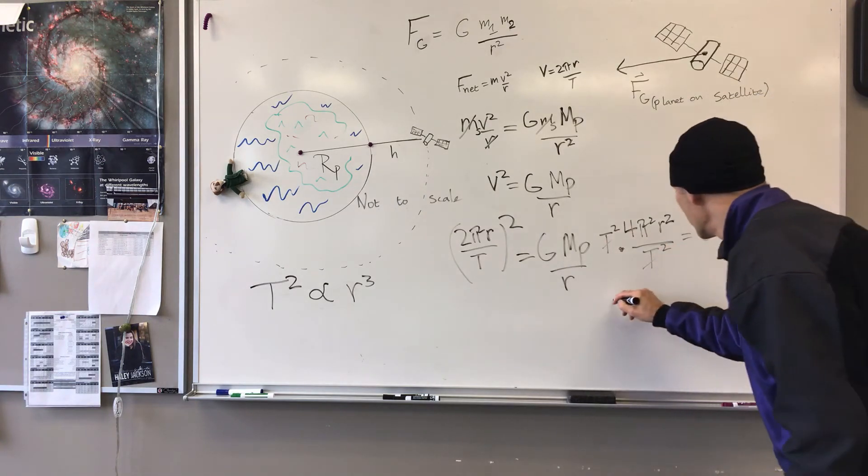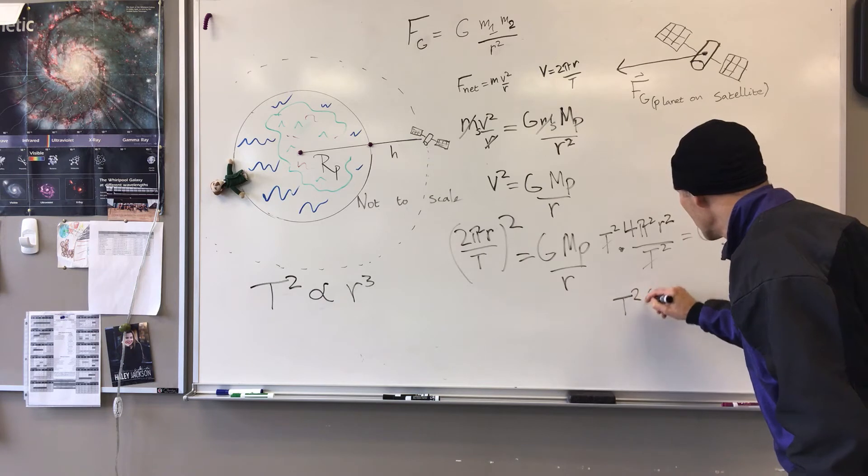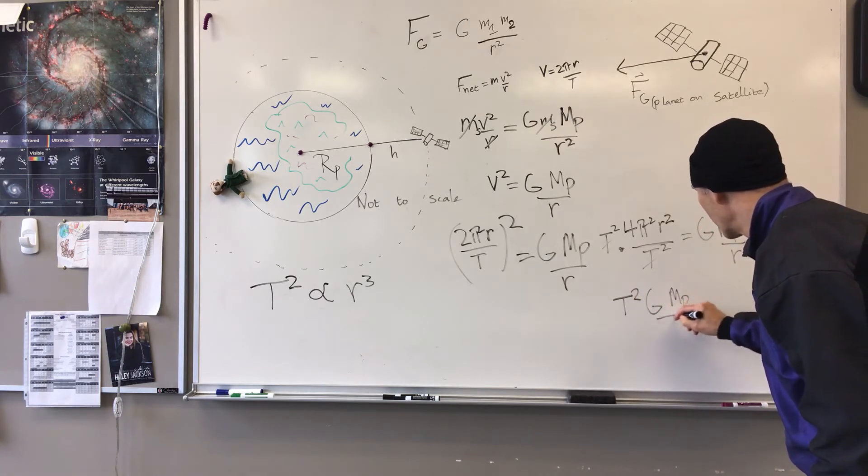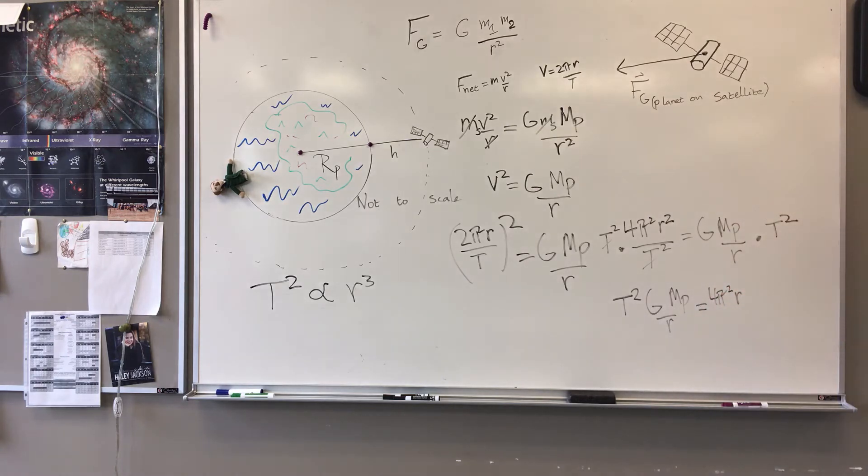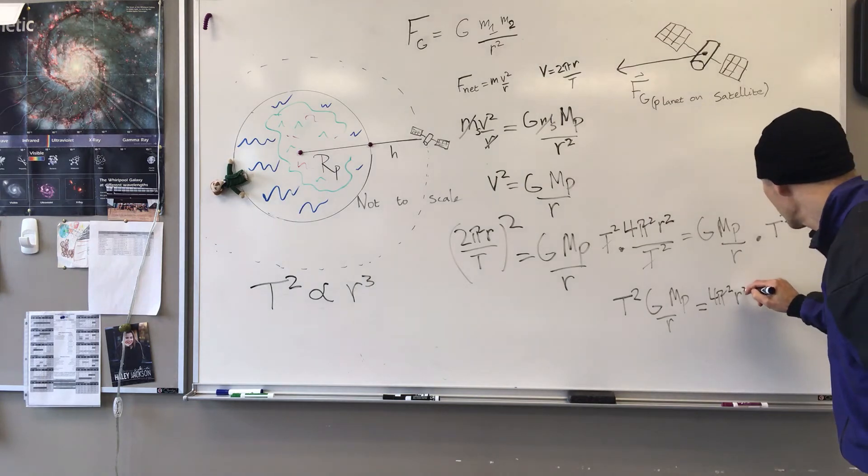And I have T squared G, mass of the planet over R equals 4π squared R. Oops, sorry, sorry, R squared.